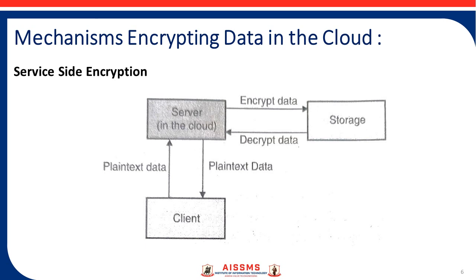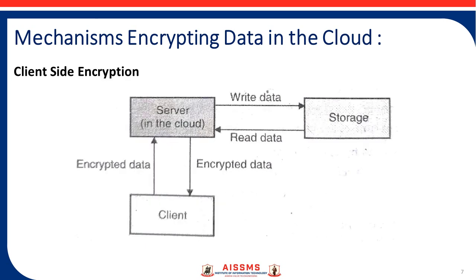The second mechanism is client-side encryption. In this type of encryption, the client encrypts the data before sending it to the server. The server simply writes the data as received from the client. When reading the data, the server passes the encrypted data back to the client, and the client must decrypt it before it can be read in plain text. This is client-side encryption.